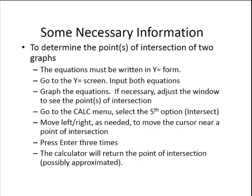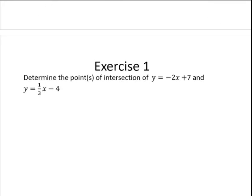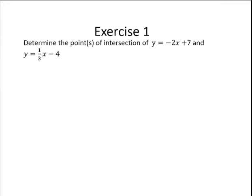Alright, so let's look at an example. Here we are asked to determine the point or points of intersection of y equals negative 2x plus 7 and y equals 1 third x minus 4. So I am going to call my y1 the negative 2x plus 7 and I will call my y2 the 1 third x minus 4.